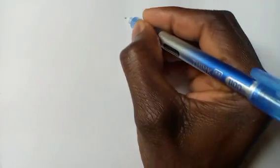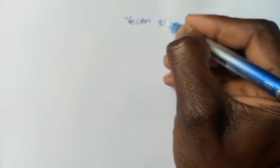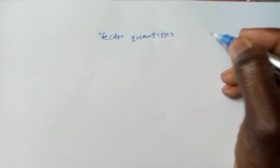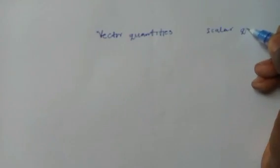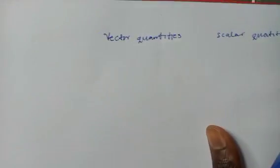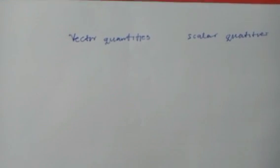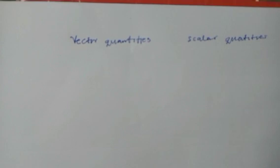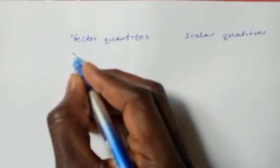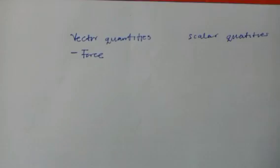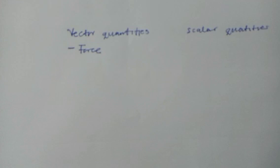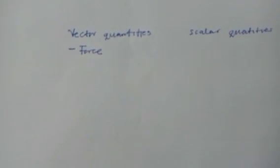If someone is to ask for the examples of vector quantities, I'll write the examples of vector quantities on one side and the examples of scalar quantities on the other. For vector quantities, I have to point out all quantities that have both magnitude and direction. I can start with force — if I'm pushing something on a horizontal surface, a force can point in a specific direction to make a given object move, so force is an example of a vector quantity.